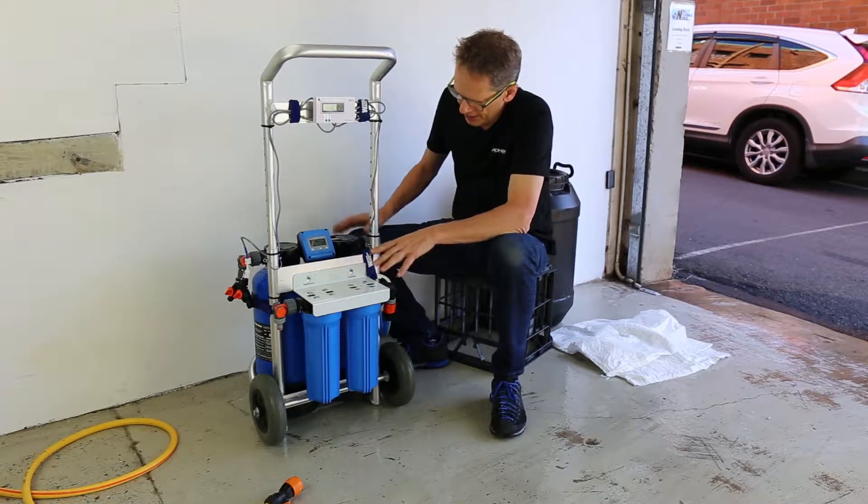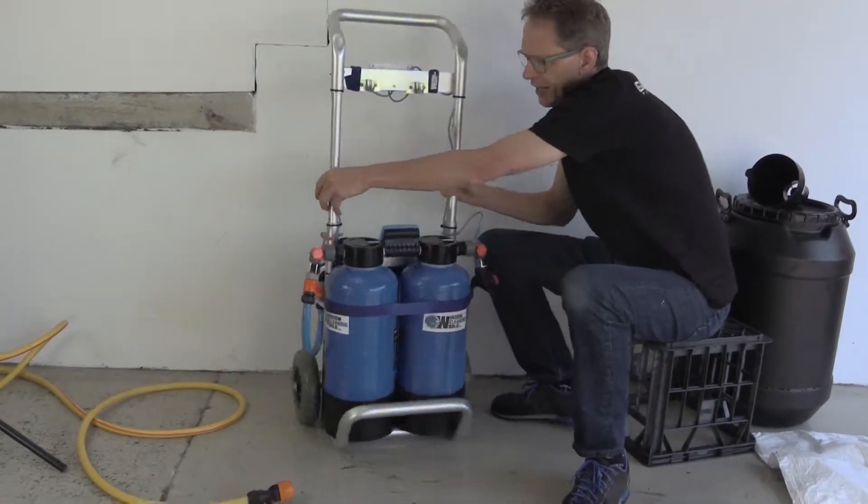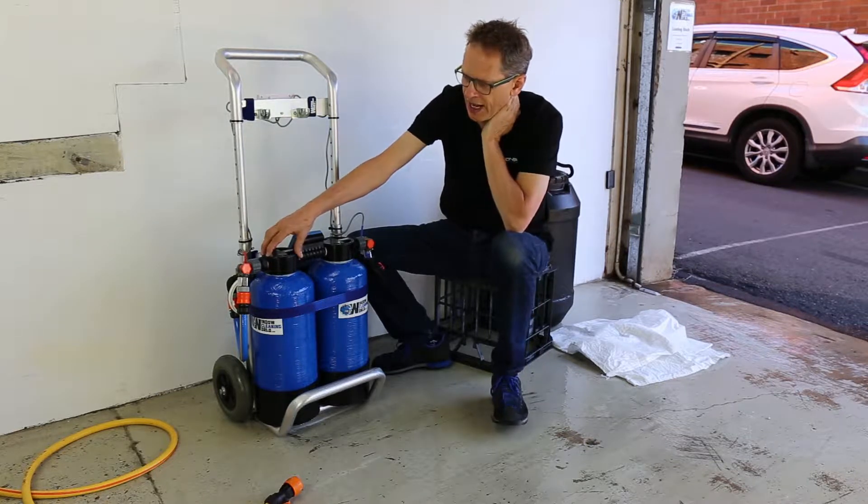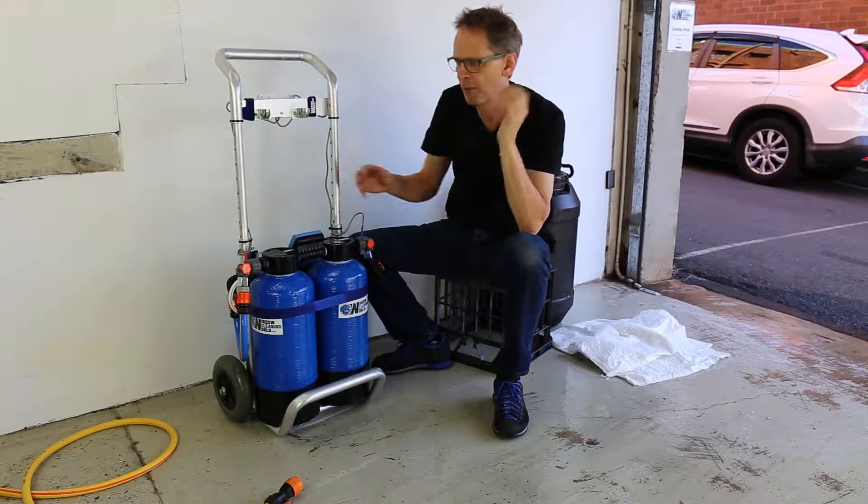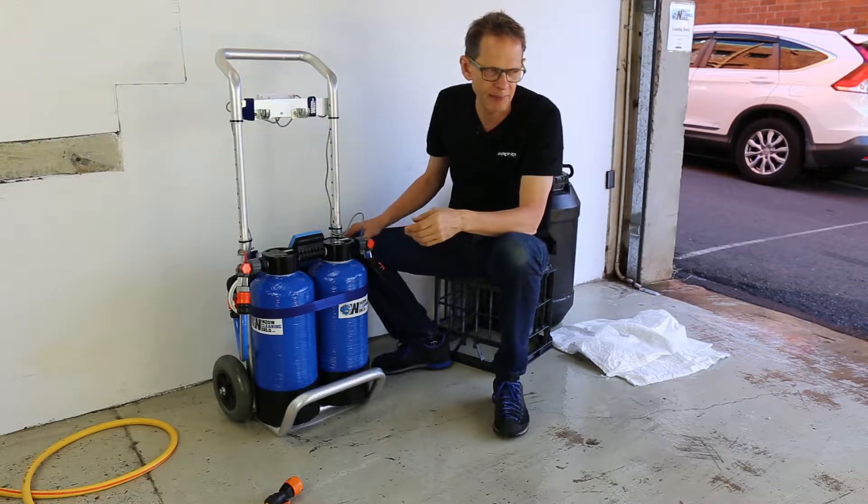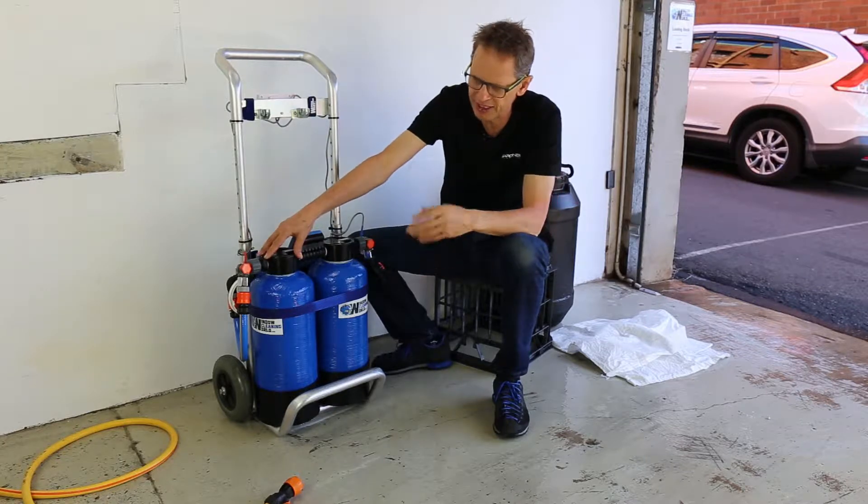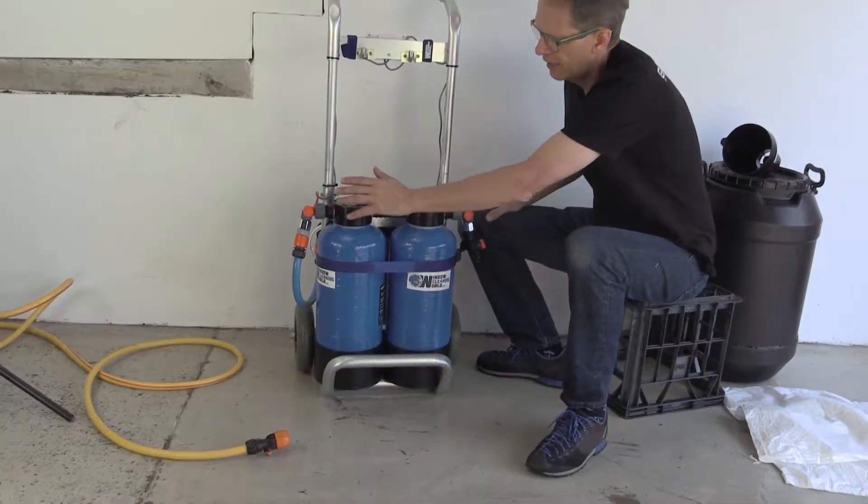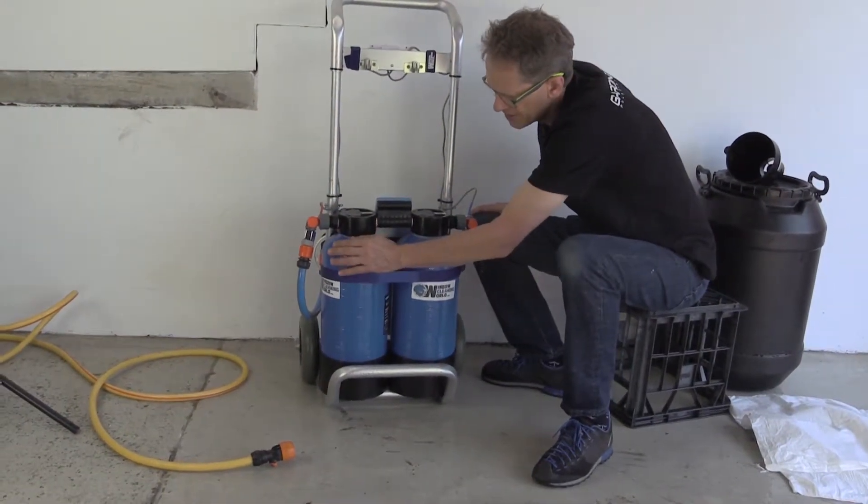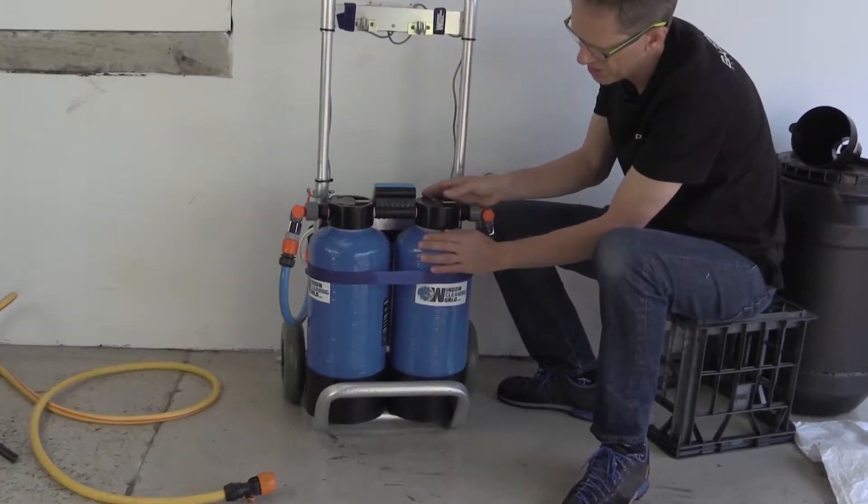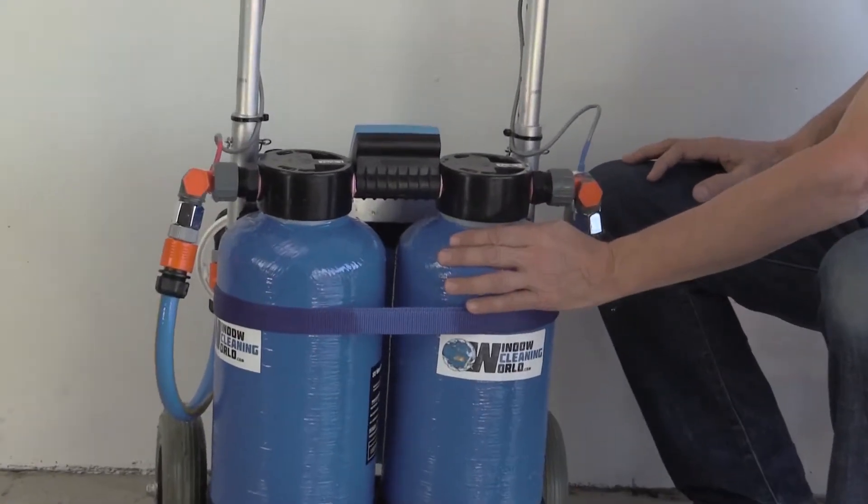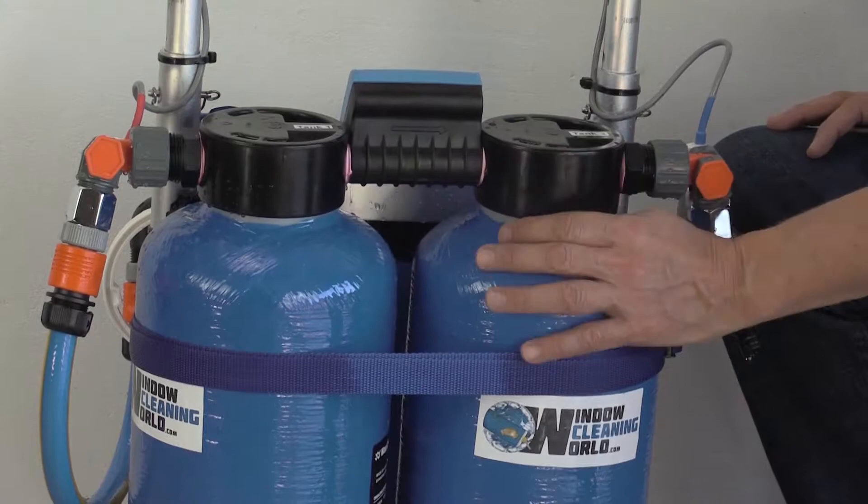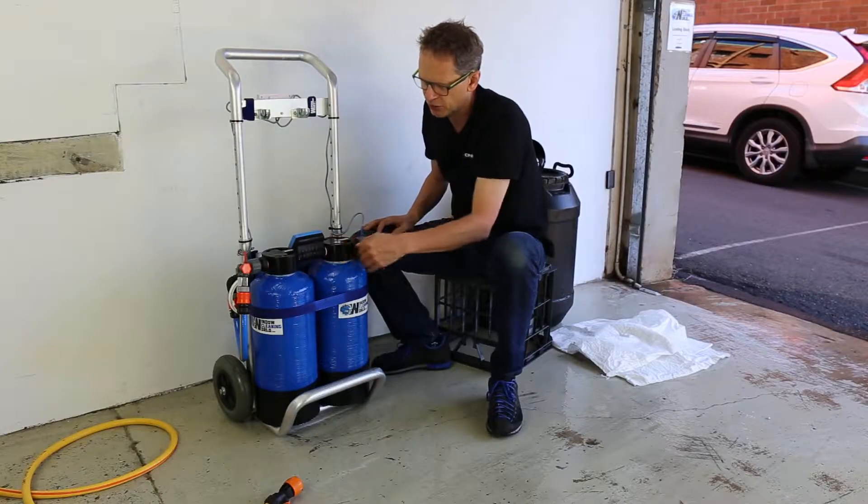So we're going to change the resin in tank 1. Imagine that we've used this tank for quite a while and tank 1 is now reading approximately what the tap water is reading. I would change the resin when it reads about 80%, so it hasn't quite reached what the TDS of the tap water is. Then we're going to put fresh resin into tank 1 and swap positions. Tank 2 would have done some work already, so it's not 100% fresh anymore. We're going to put the older tank in the 1 position and the freshest tank in the number 2 position.